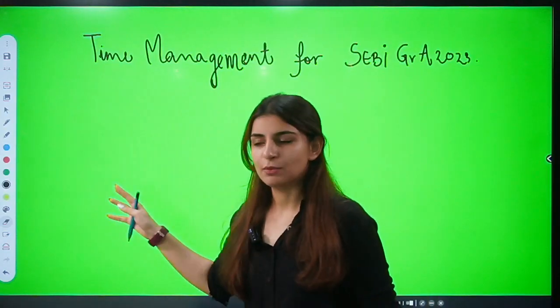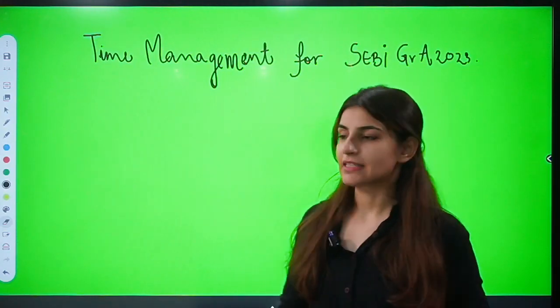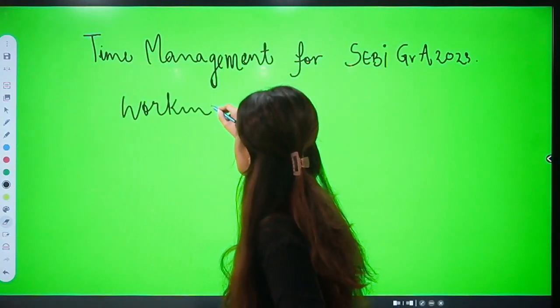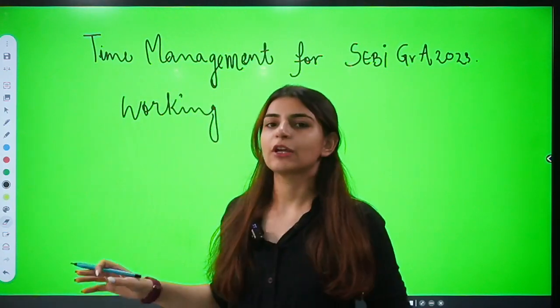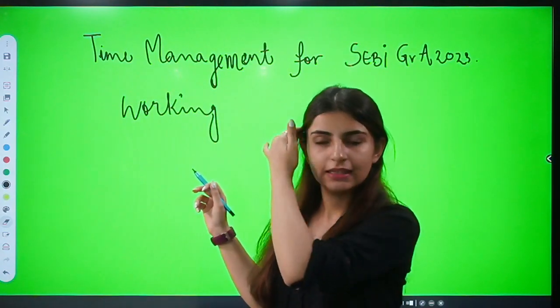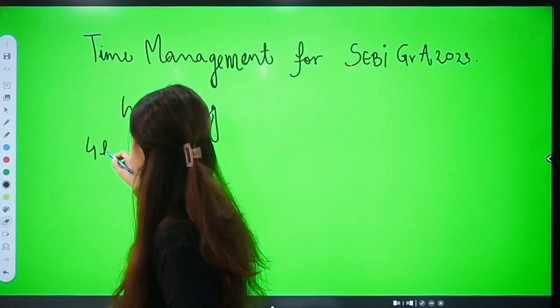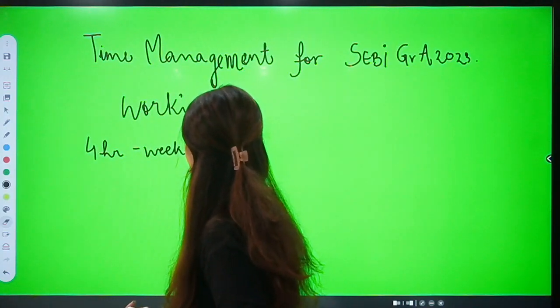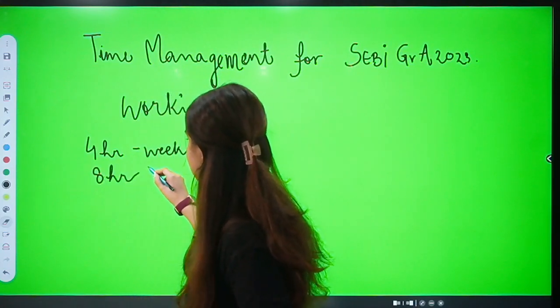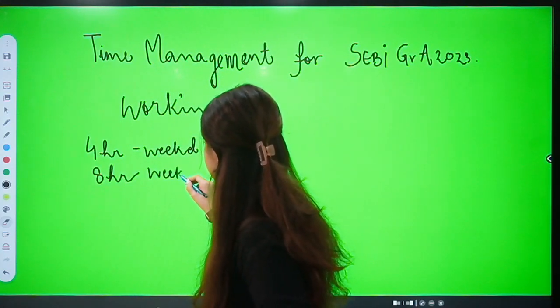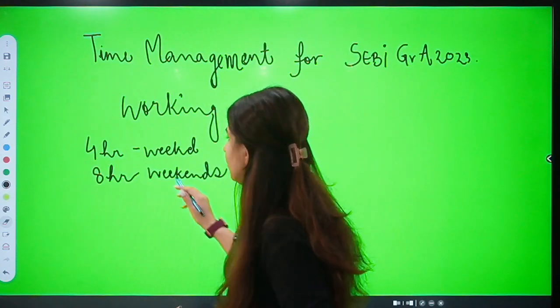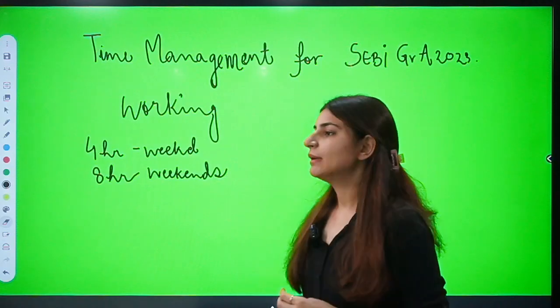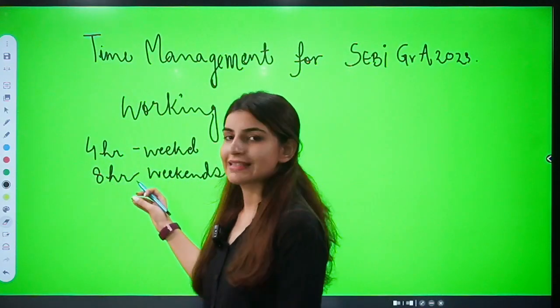Today we're going to talk about time management for both working and non-working aspirants. We're going to start with working aspirants. Since you're working, you cannot spare 8 to 10 hours a day. You have to give at least four hours each day on weekdays and eight hours on weekends. That's the minimum expected. If you can stretch this four hours to six hours, that's very good. But this is the minimum amount of time for your exams.